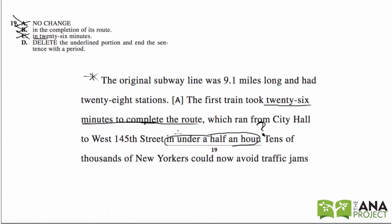The best choice is to delete the underlined portion, because we already have all the information we need: the first train took 26 minutes to complete the route, which ran from City Hall to West 145th Street. We are using the redundancy rule for this question. The correct answer is D. Options A, B, and C all contain redundant — duplicate — information that is not needed.